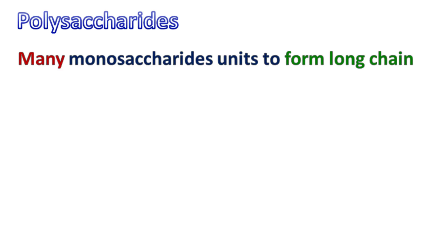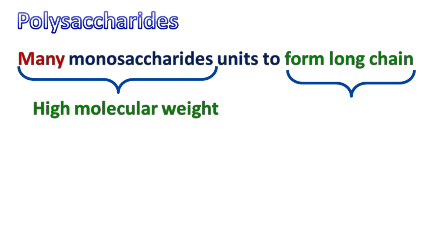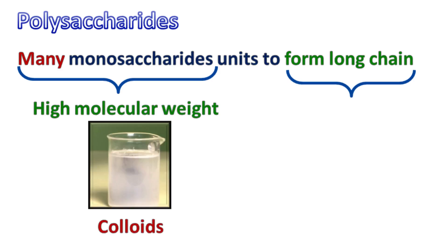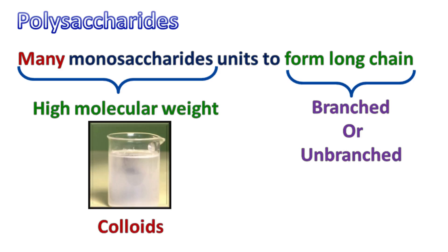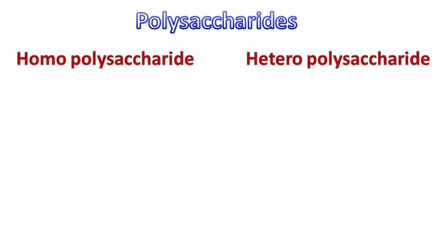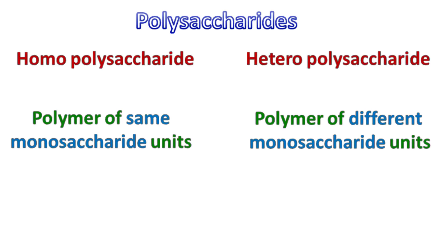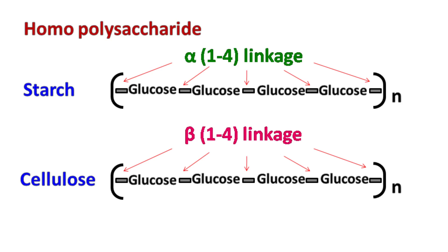Let's talk about polysaccharides. Polysaccharides are carbohydrates that have many monosaccharides linked together to form a long chain. They have a high molecular weight and often form colloids when dissolved in water. They can either be branched or unbranched. Polysaccharides are usually classified into homopolysaccharides and heteropolysaccharides. Homopolysaccharides are polymers of the same monosaccharide units, while heteropolysaccharides are polymers of different monosaccharide units.